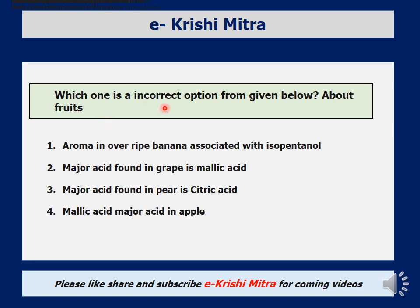Thirteenth question: which one is an incorrect option about fruit acids? Options are: aroma of overripe banana is associated with isoamyl alcohol; major acid in grape is malic acid; major acid in pear is citric acid; malic acid is major acid in apple. In the Rosaceae family, the major acid in apple is malic acid — correct. In pear, the major acid is citric acid — correct. However, in grapes the major acid is tartaric acid, not malic acid. So the incorrect option is that the major acid in grape is malic acid.